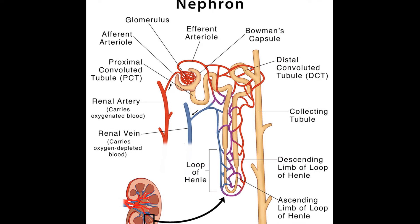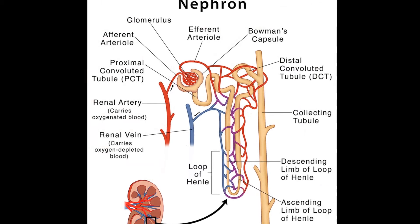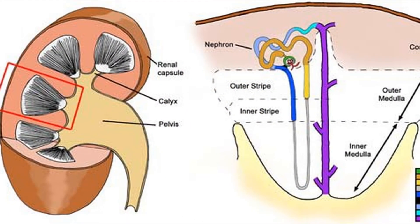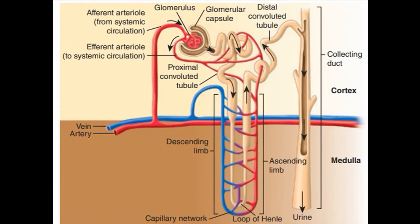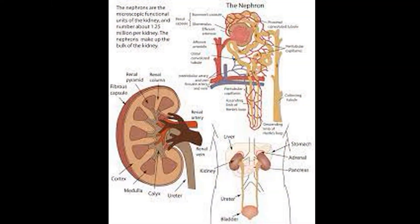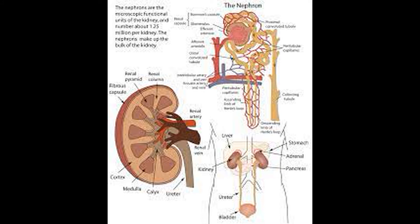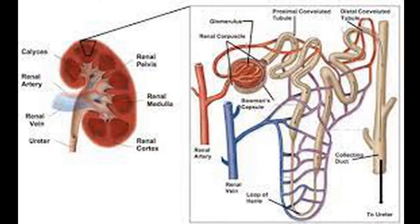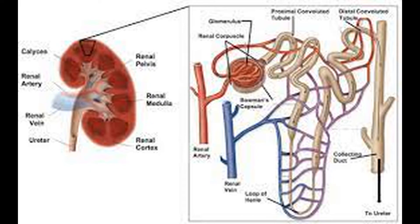Nephrons: Inside the kidney, there are millions of microscopic tubular structures called renal tubules or nephrons. Each nephron starts as a cup-like Bowman's capsule which continues as a narrow tubule. The tubule is convoluted — that is, twisted — and opens into a collecting duct. All the collecting ducts then open into the renal pelvis which leads into the ureter. The nephron is the structural and functional unit of the kidney.